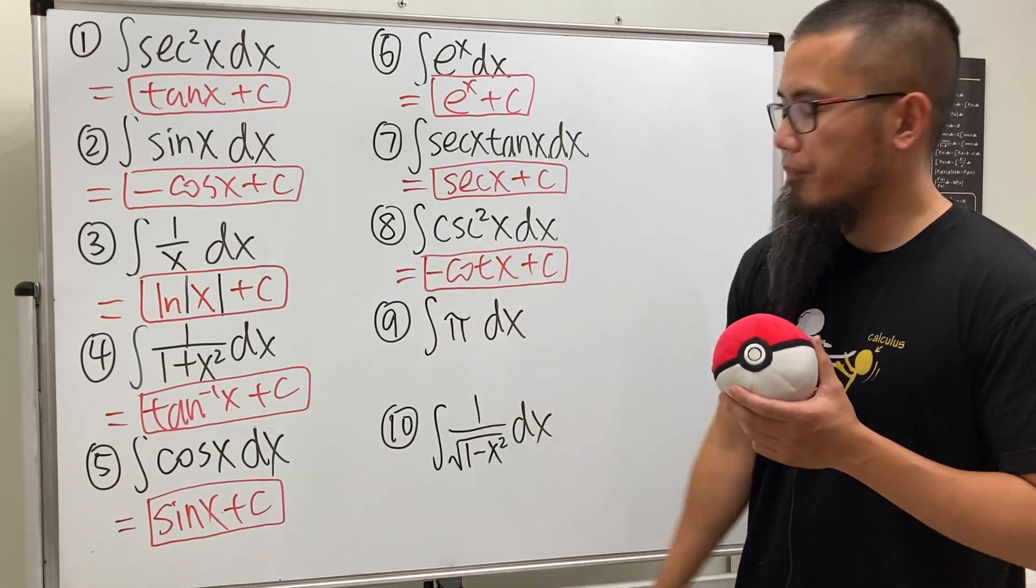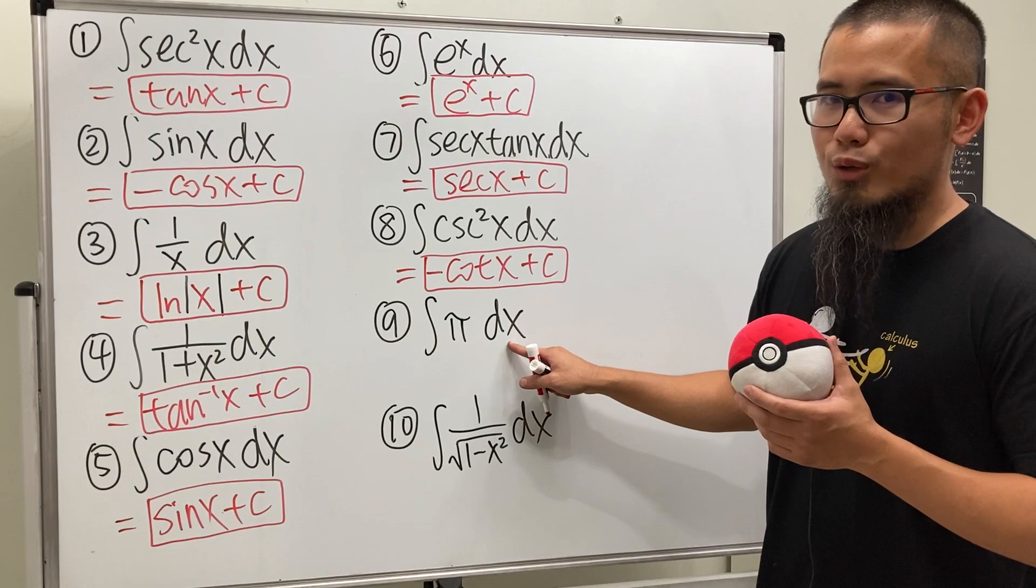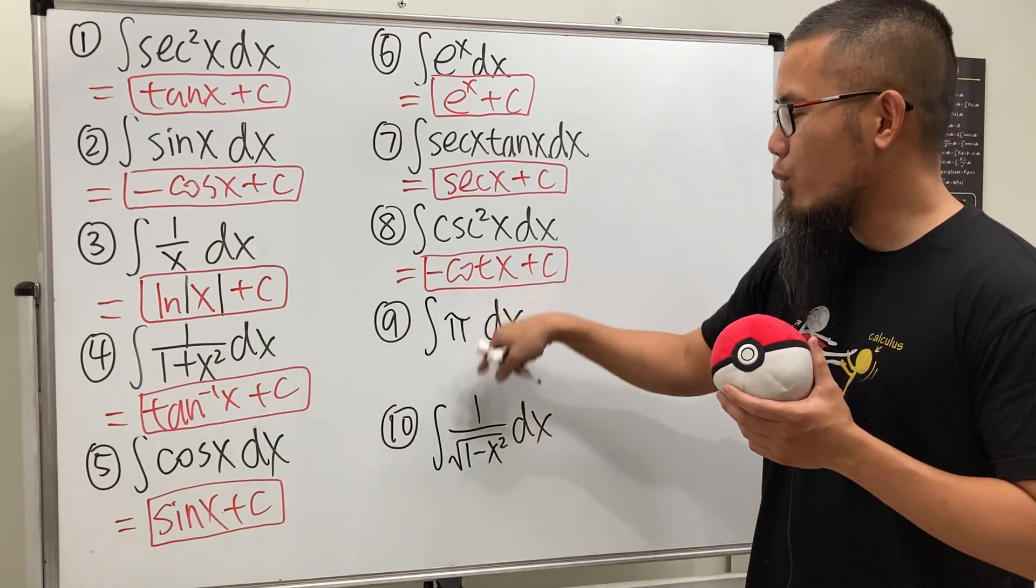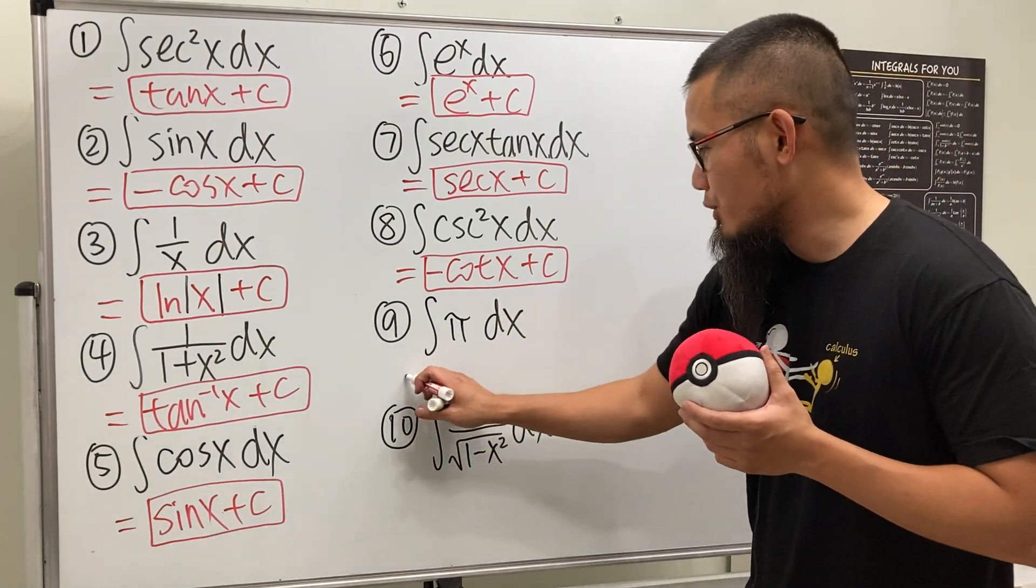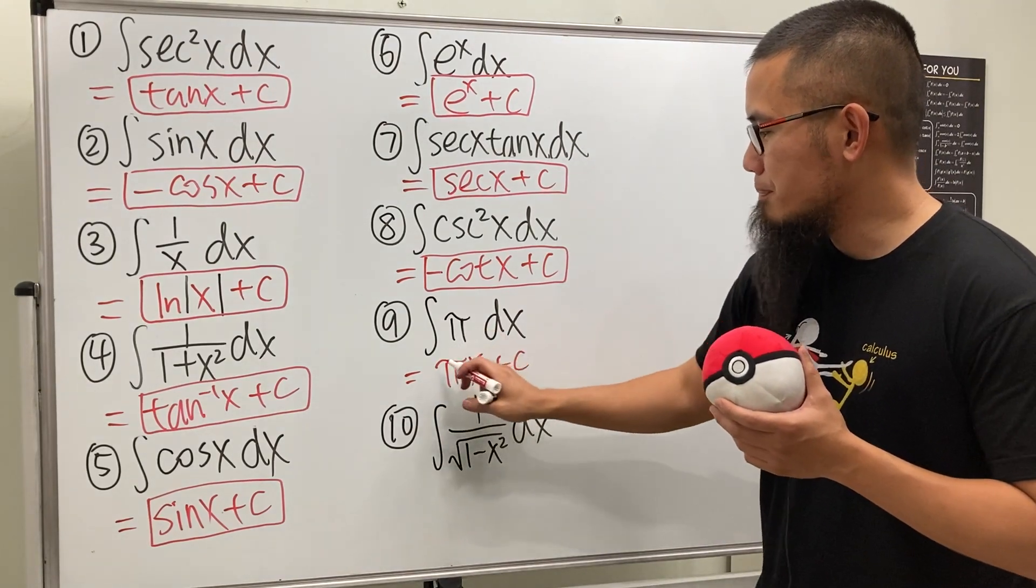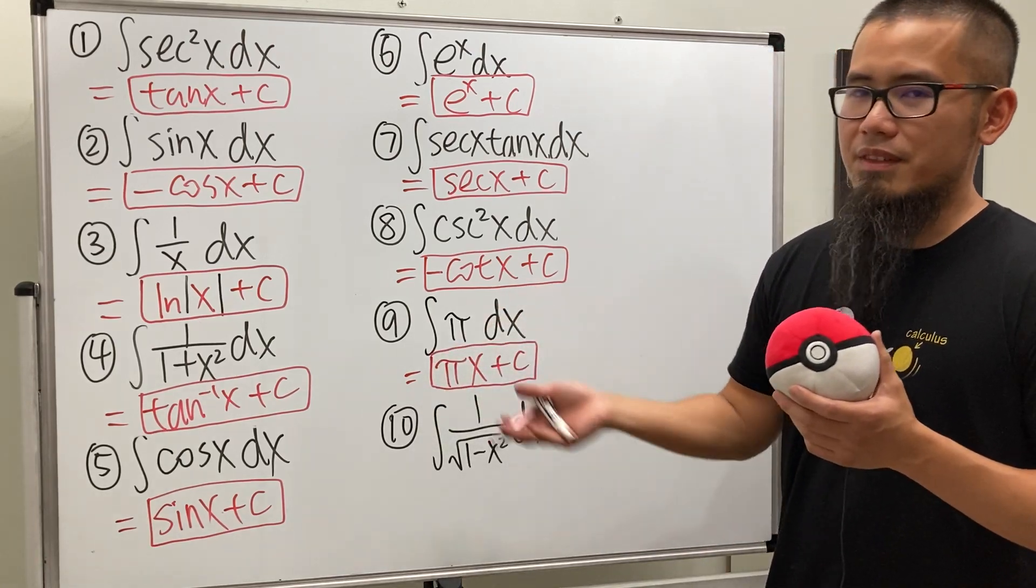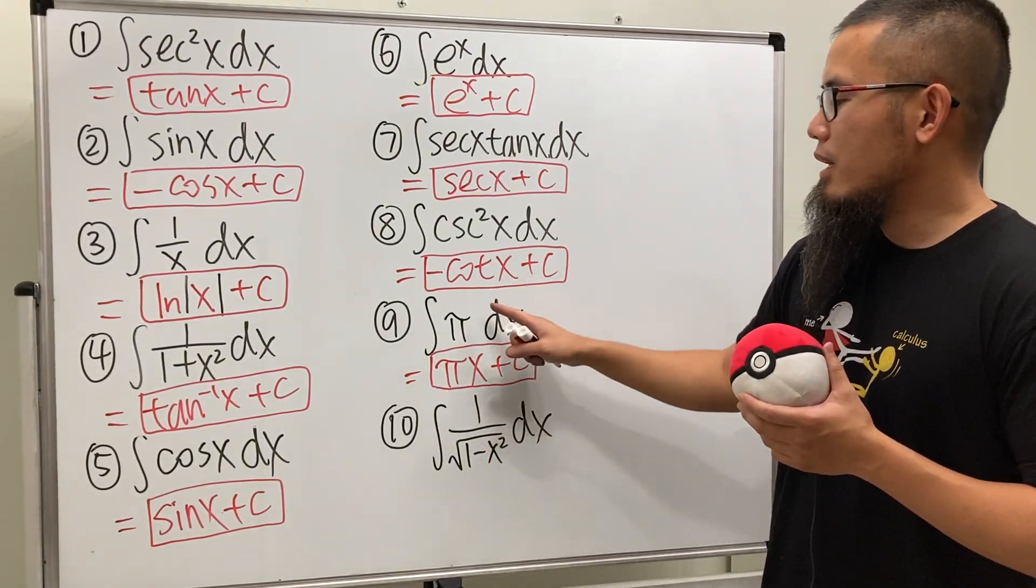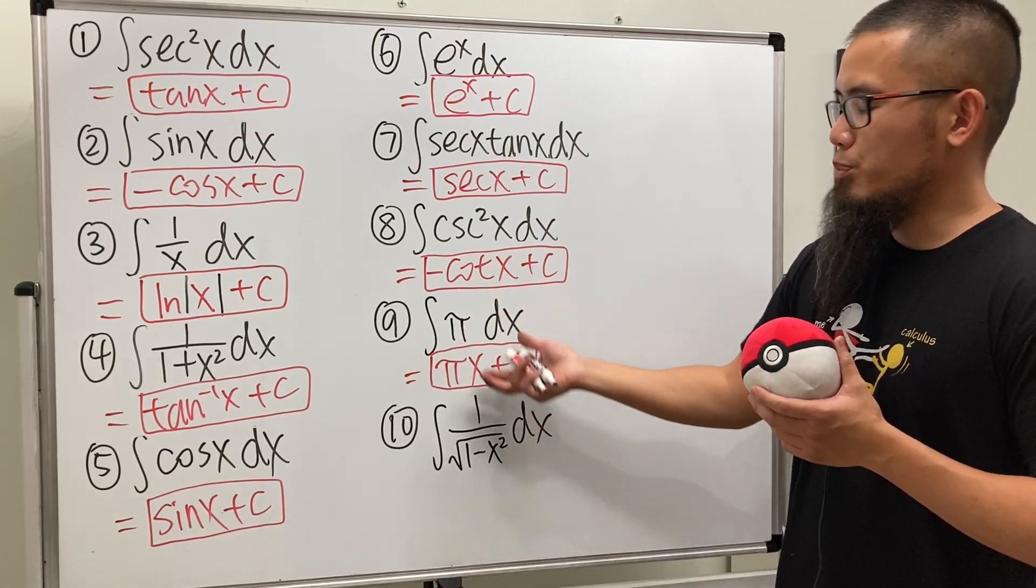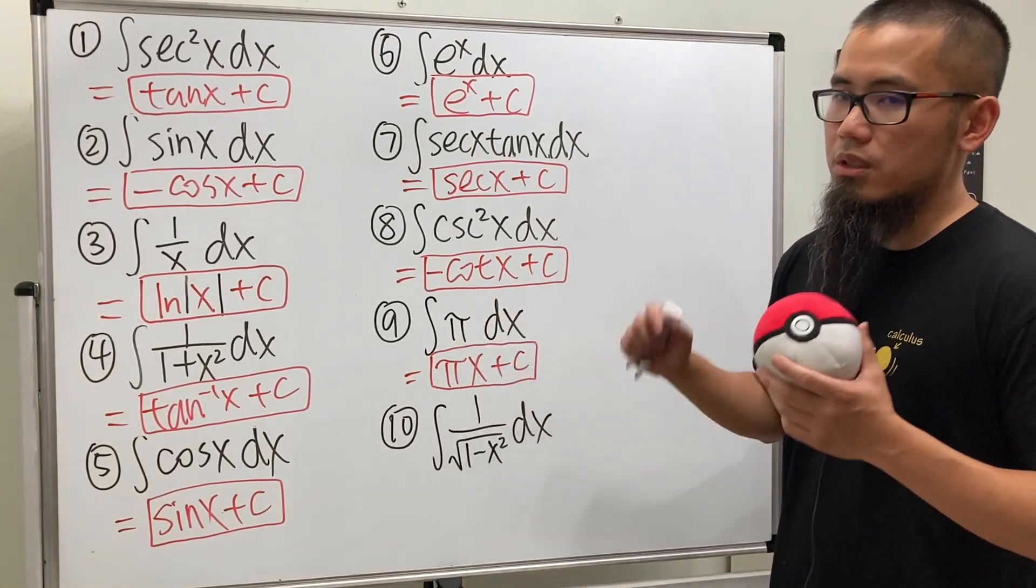Next one, integral of pi. In the x world, this is not pi squared over 2. This is just going to be pi times x, that's all. Because pi is just a number. You can look at pi as like 17, but pi is 3.14... And when we integrate a constant, you just pretty much attach x to it. If you differentiate that, you just get this for the derivative.